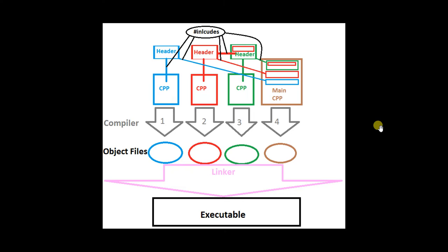The linker collects all the object files and looks for all the promises you made. If you said there's a function called foo and it can't find it anywhere, you get a linker error. If the linker finds no errors, it packages everything into one executable. Then you run it, find logical errors, go back, fix them — that cycle continues endlessly, like phone updates. That's one reason I always ask you to comment your code.